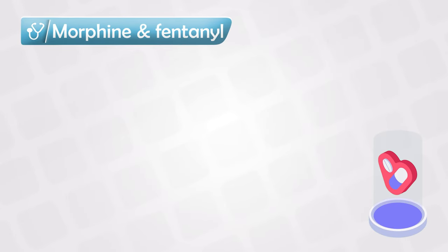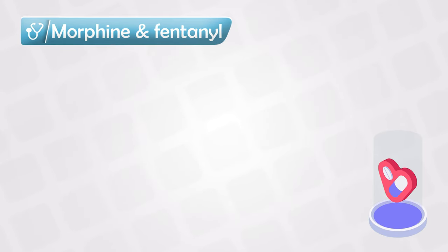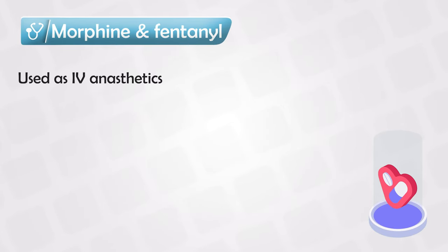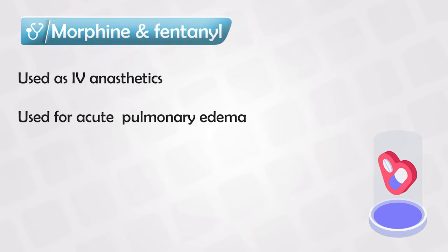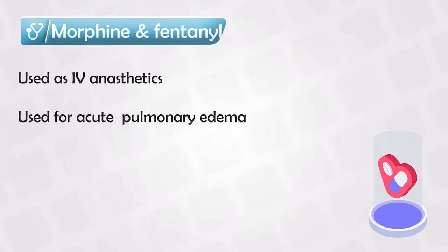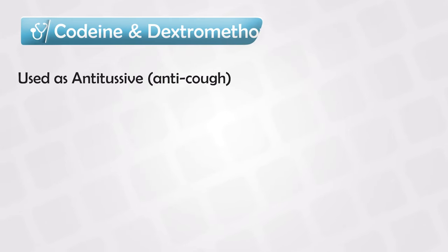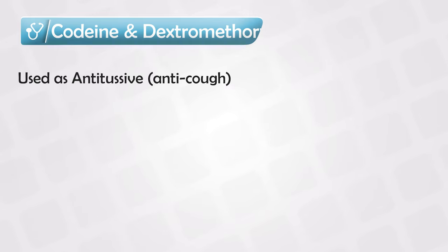Both morphine and fentanyl are IV anesthetics and can be used as IV anesthesia — we mainly use them in anesthesia for cases of acute pulmonary edema. Codeine and dextromethorphan are both antitussives, so they are anti-cough medications.